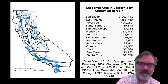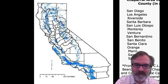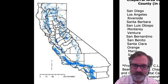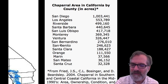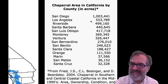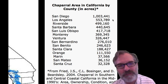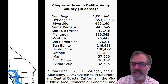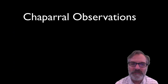If you take a look at the map of California, all of the blue represents chaparral. Every single county in the state of California has chaparral in it. Santa Cruz has the least amount, and San Diego has the most—over a million acres of chaparral. Los Angeles comes in second place with about half a million acres.